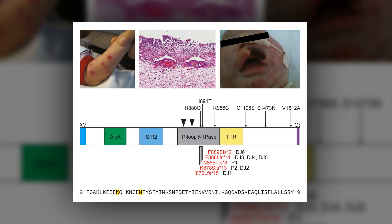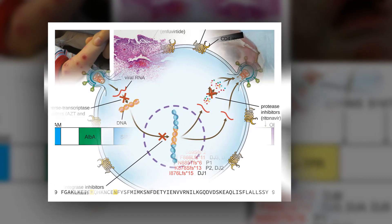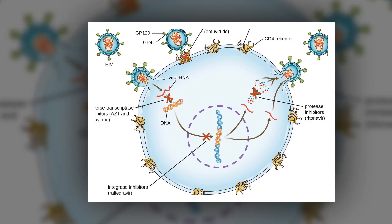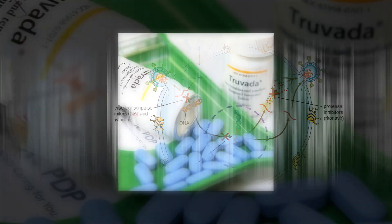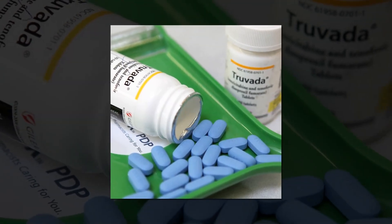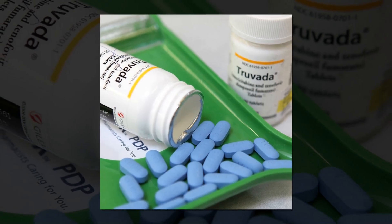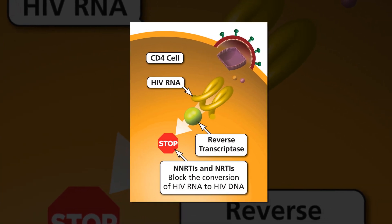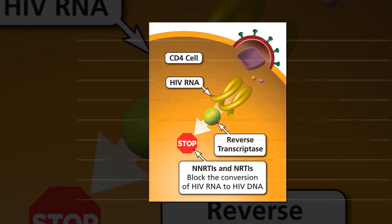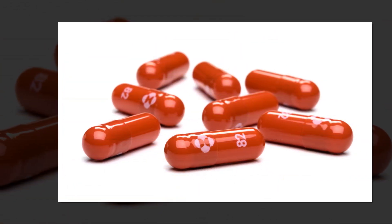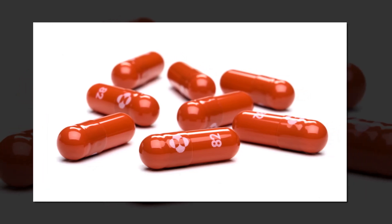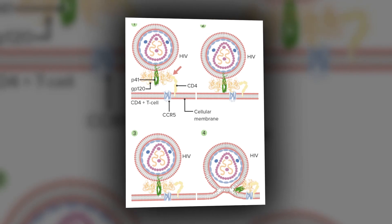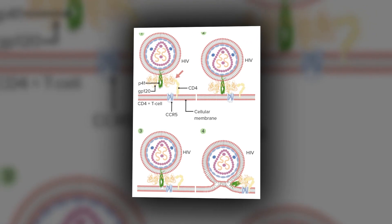Under IFN stimulation, endogenous SAMD9L expression was detectable in various cell lines, confirming SAMD9L as an interferon-stimulated gene. Knockdown of SAMD9L resulted in a significant three-fold increase in HIV1 replication compared to control cells, demonstrating its functional relevance as an antiviral factor. Further, a schlafen (SLFN)-like active site within SAMD9L was found to be essential for its antilentiviral function across mammalian species. Mutating E198 and D243 abolished SAMD9L's ability to inhibit cellular protein synthesis.